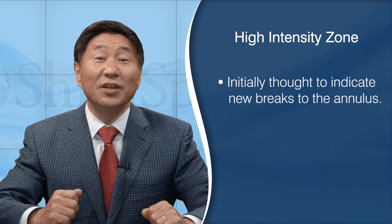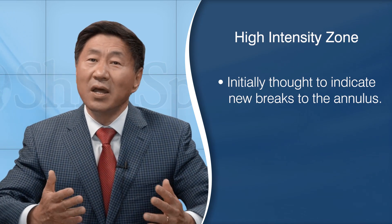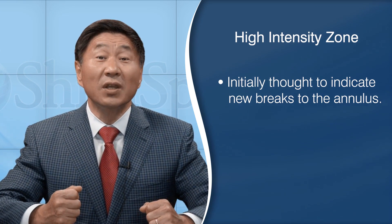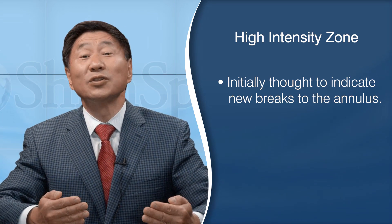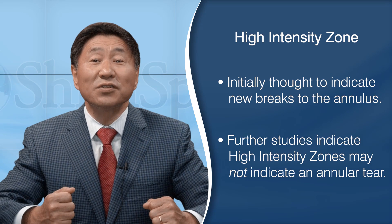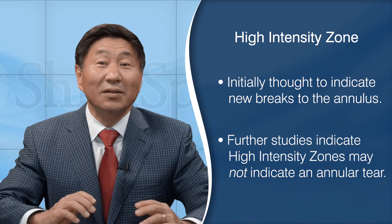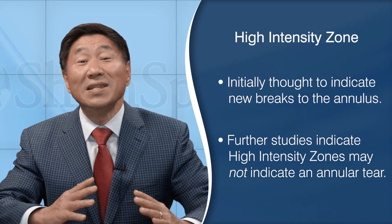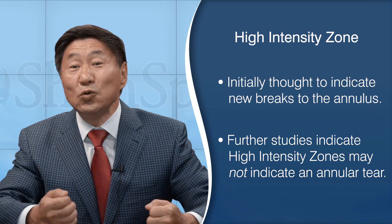This procedure, called a discogram, remains controversial, with concerns that the procedure itself will cause future degeneration. MRI studies are less invasive. In the 1990s, as MRI studies were becoming more commonly used, findings towards the edge of the annulus called high-intensity zones were initially thought to indicate new breaks in the annulus or even indicate pain coming from the annulus. This too became a very controversial issue — in the 1990s many people had surgery for these so-called high-intensity zones. Unfortunately the results were not as predictable as thought, and long-term studies found that these high-intensity zone findings may never actually go away.